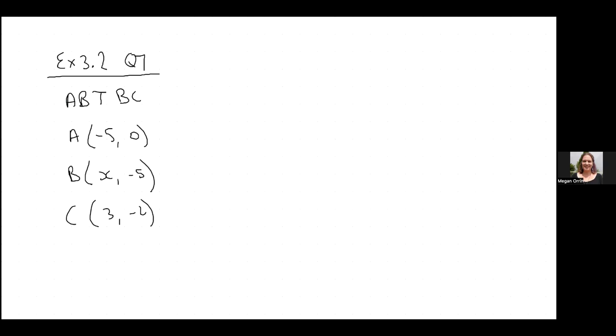I'm going to solve question seven for you because a few people were struggling with this one. This is the information we're given: line AB is perpendicular to line BC and they give us these three points.